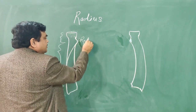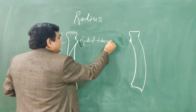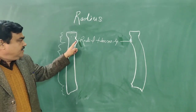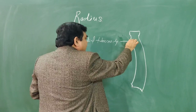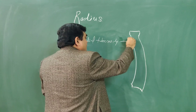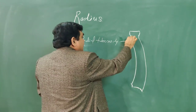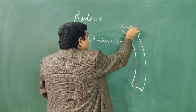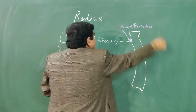This tuberosity is the radial tuberosity. It is anteriorly smooth and posteriorly rough. In the rough part, the biceps brachii muscle is inserted.